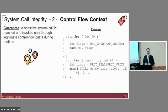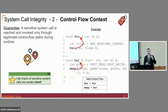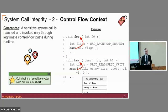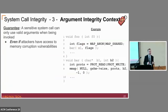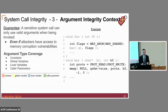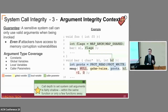Next, we have the control flow context. The guarantee here is that a sensitive system call is reached and invoked only through legitimate control flow paths during runtime. This context makes associations between callers and callees, and uses that metadata to ensure correct control flow at runtime. From our heuristic study, call chains of sensitive system calls are usually short. Last but not least, the argument integrity context guarantees that a sensitive system call can only use valid arguments when invoked — even in the presence of memory corruption in the untrusted application. This context handles all argument types: constants, global variables, local variables, and caller parameters. The call depth to set system call arguments is fairly shallow, happening in the very same function or only a few functions away.